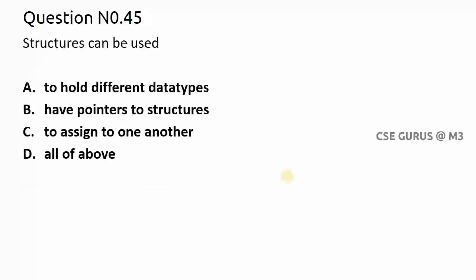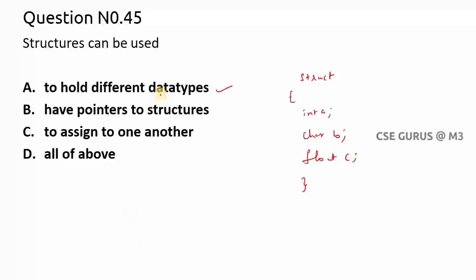Coming to question number 45: why are structures used? Structures can be used to hold different data types — for example, struct with int a, char b, float c. We can also have pointers to structures, and we can assign one structure to another. So the answer is all of the above — option D is correct.